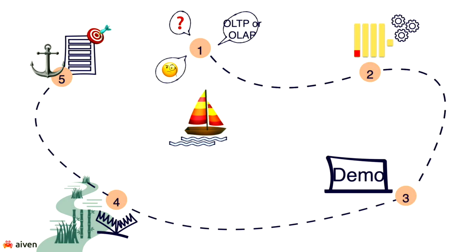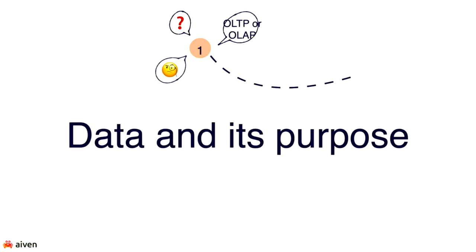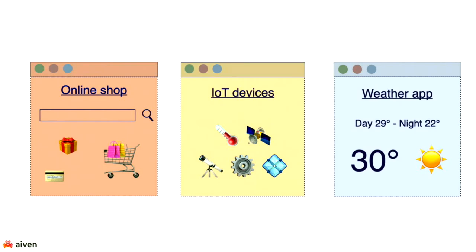Let's talk about data and the purpose of data. Think about online shopping, IoT devices, event streams, and any modern application on your phone. The amount of data coming out of today's modern world is growing exponentially with no sign of stopping. ClickHouse is the kind of database that helps us as technologists make sense of all that data as the size, volume, and frequency of data increases.